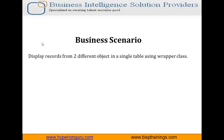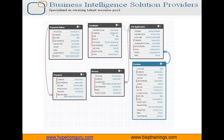As I mentioned, the business scenario is to display records from two different objects. Let's see the data model first. This data model includes the candidate object, payment option, payments, review, position, and job application — it's a recruitment or talent management application built in Salesforce. I am going to display records from position and candidate: from position I'll show position name, location, and maximum pay; from candidate I'll show first name and last name, all in a single page block table.